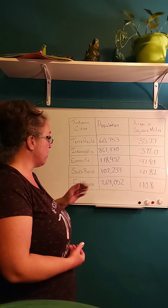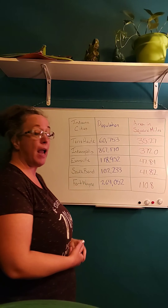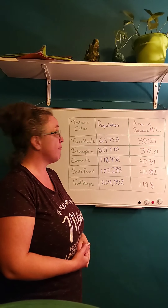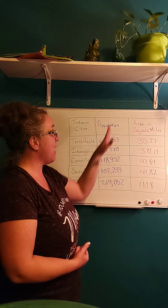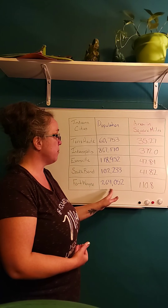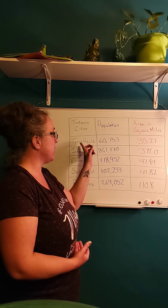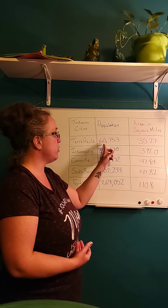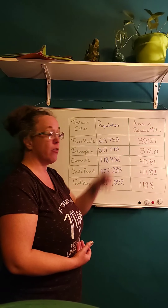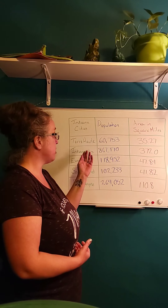Let's take a look at what we have here. The Indiana cities I used are Terre Haute, Indianapolis, Evansville, South Bend, and Fort Wayne. In the population column, you can find that the population for Terre Haute is 60,753.